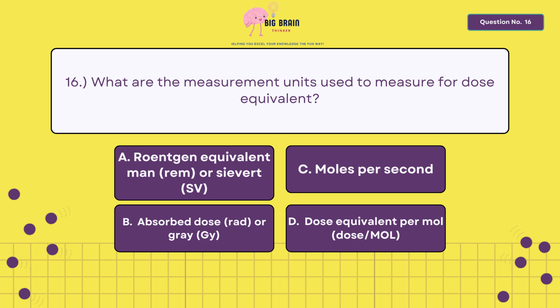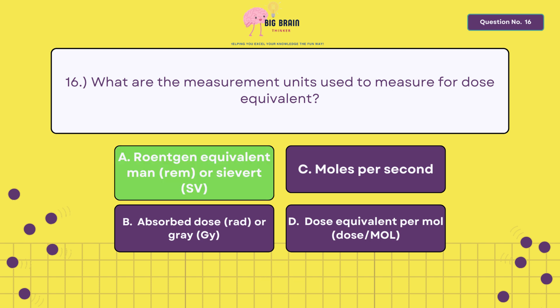Sixteen, what are the measurement units used to measure for dose equivalent? The answer is letter A, roentgen equivalent man, or sievert.